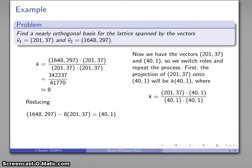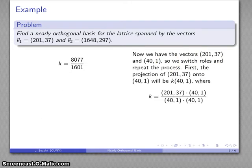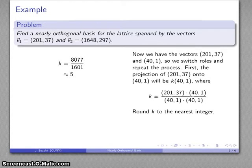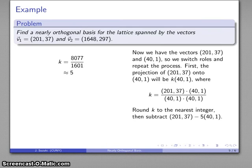I'll do the same thing. The projection will be equal to the dot product, and that's going to be rounded to the nearest integer. That's around 5. So I'll reduce this vector by subtracting 5 times this vector from it. And that gives me the new basis vector (1, 32), and so now I have the basis vectors (1, 32) and (41, 1).